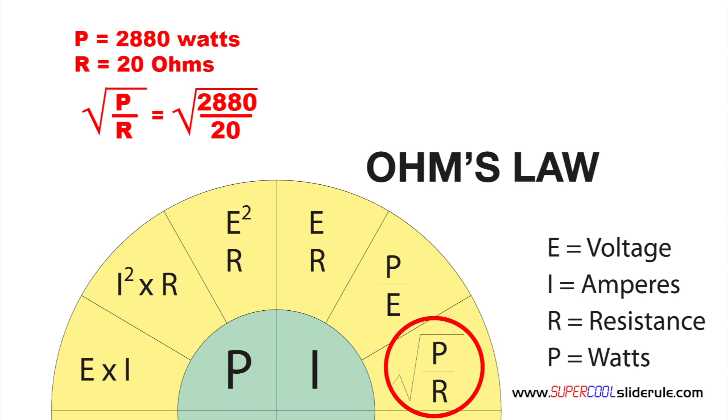Divide 2880 by 20. This gives us 144. The square root of 144 is 12.